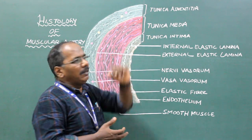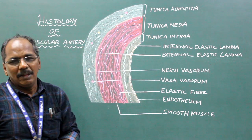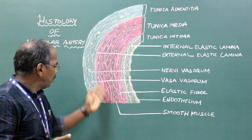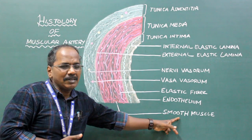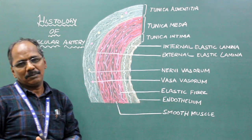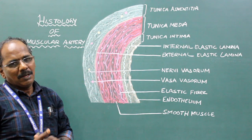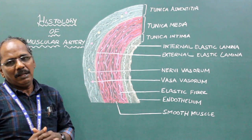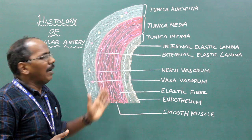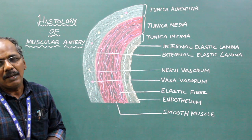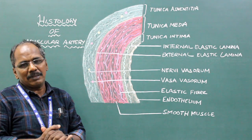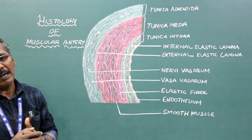Tunica Media is the middle layer which is made up of smooth muscle fibers and elastic fibers. In the medium-sized artery or muscular artery, the Tunica Media contains more smooth muscle fibers and less elastic fibers, hence the name muscular artery.